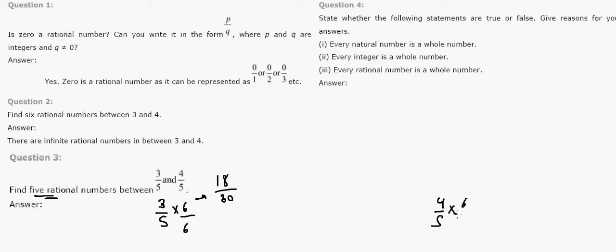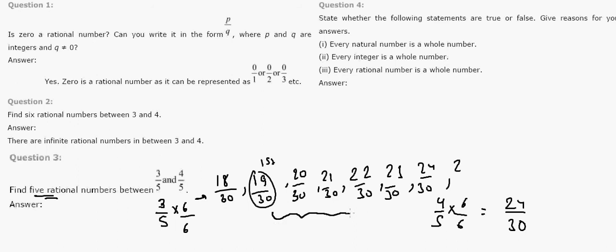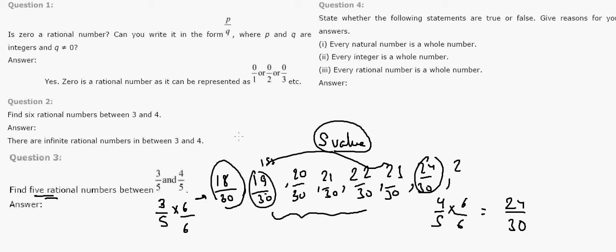Similarly, 4 by 5 multiplied by 6 over 6 gives 24 by 30. So our boundaries are 18 by 30 and 24 by 30. The 5 rational numbers between them are: 19 by 30, 20 by 30, 21 by 30, 22 by 30, and 23 by 30 — five values between 3 by 5 and 4 by 5.